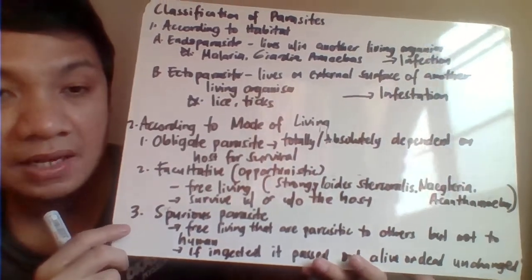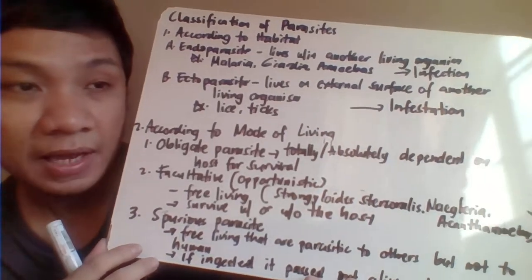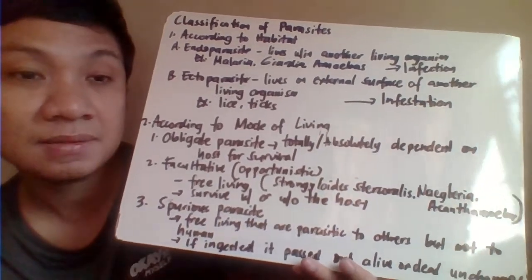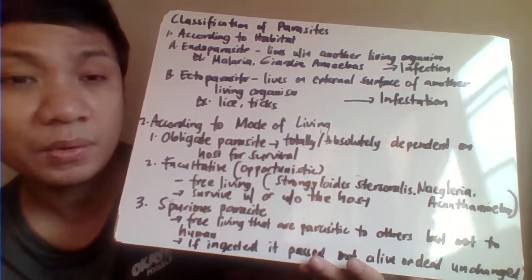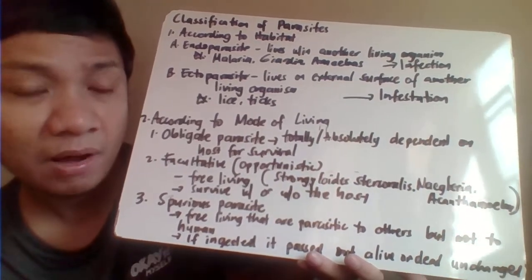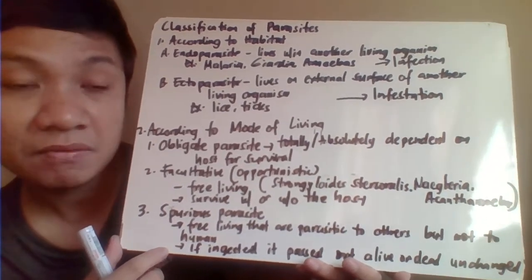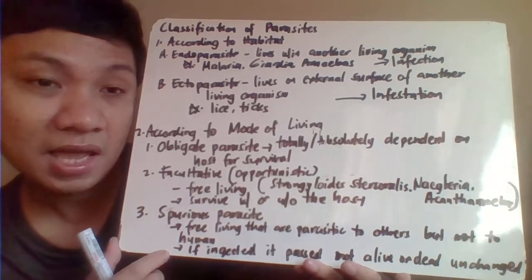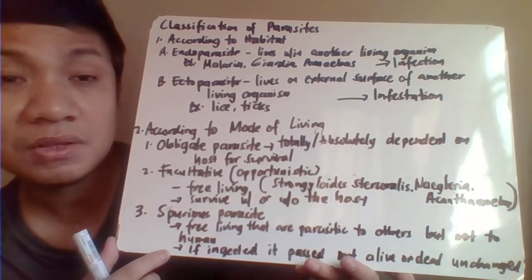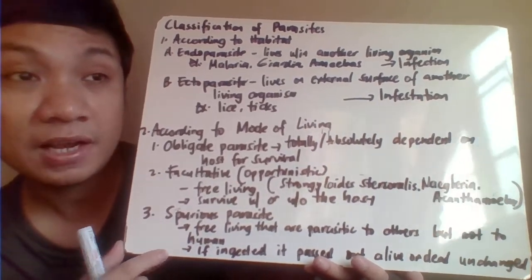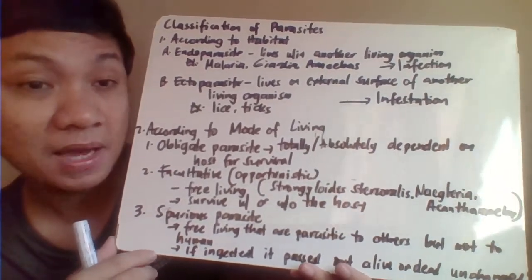Spurious parasites are free-living in nature and primarily infect animals. Humans can acquire them through accidental infection. Once ingested, they enter the human body but pass out unchanged — either alive or dead — without undergoing any multiplication or reproduction inside the human host.